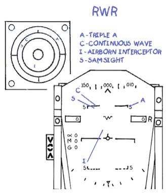Radar Warning Receiver information is also repeated on the HUD. Contacts are displayed using the same symbols as the azimuth display. HUD display of contacts, just as in the azimuth display, is 360 degrees top-down. Contacts directly in front of you are displayed at the top of the HUD, and contacts behind you are at the bottom of the HUD. Signal strength is indicated by one of three sized vectors, or lines, trailing from the identifying symbol towards the center of the HUD.